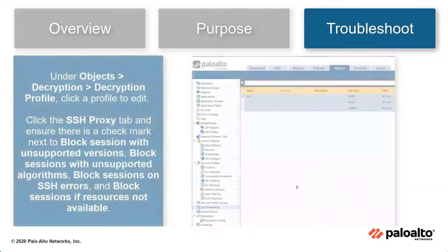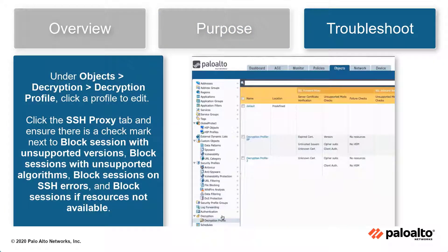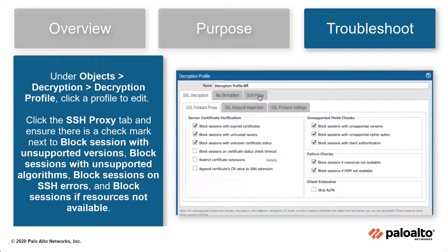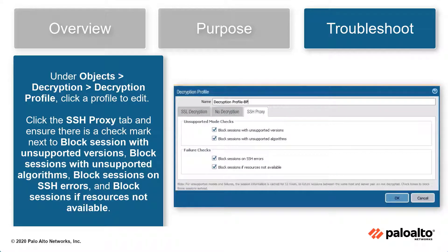Under Objects, Decryption, Decryption Profile, click a profile to edit. Click the SSH Proxy tab and ensure there is a checkmark next to: block sessions with unsupported versions, block sessions with unsupported algorithms, block sessions on SSH errors, and block sessions if resource is not available. This will ensure the best practice check passes.